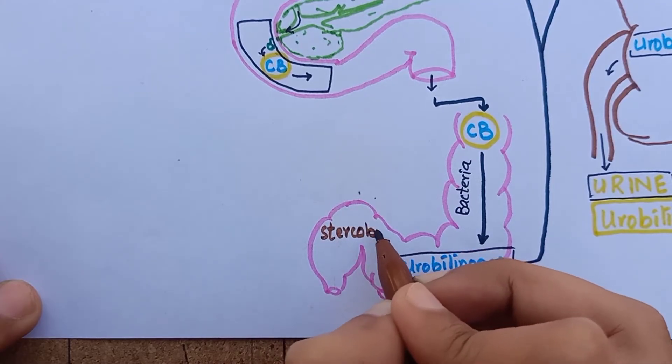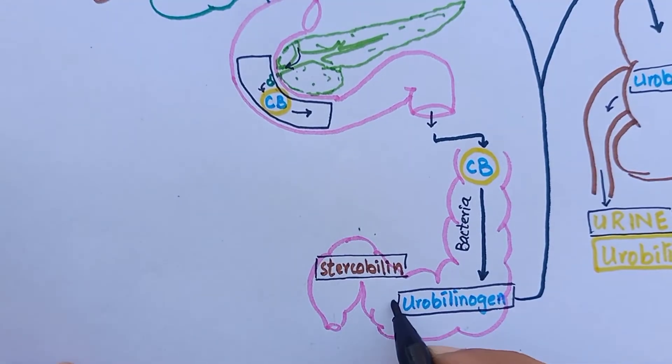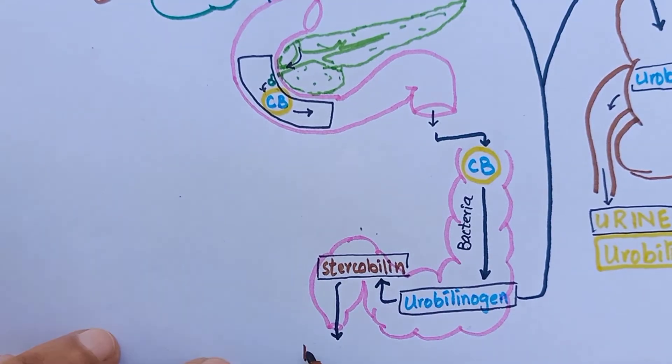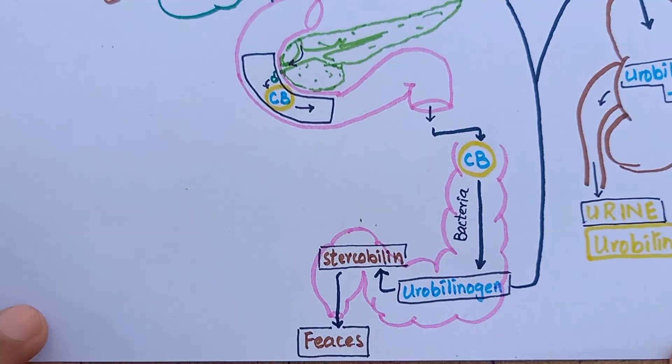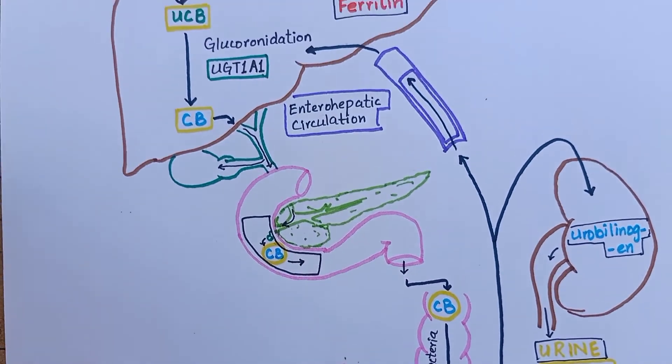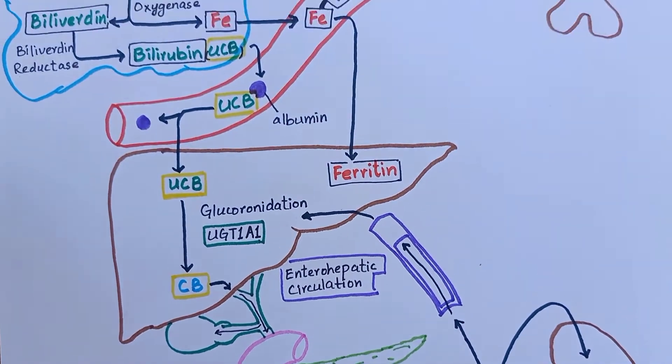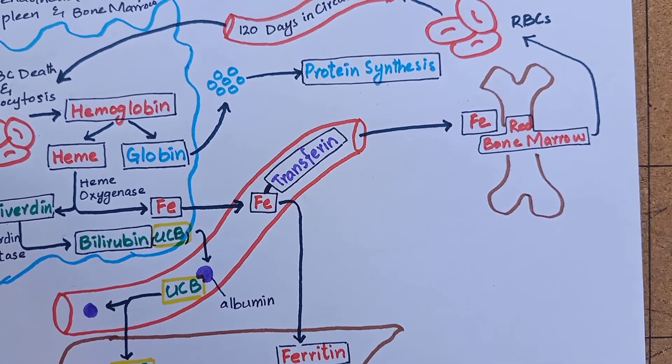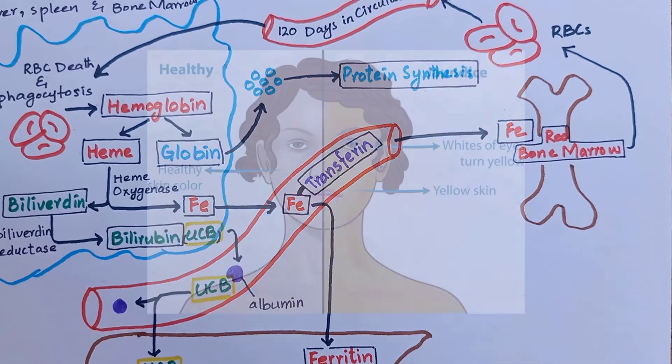While majority of urobilinogen in the intestines is oxidized to a brown pigment stercobilin that is apparent in feces. Bilirubin metabolism is important because high amounts of bilirubin in blood can lead to jaundice, a morbid condition characterized by yellowness of eyes and skin.